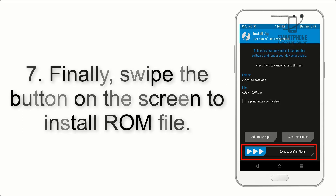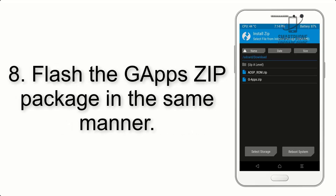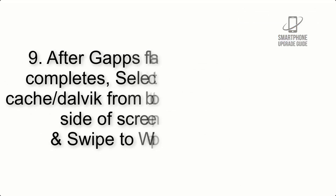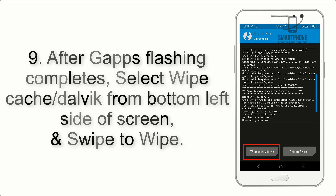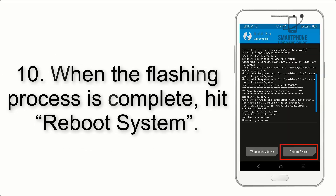Step 7: Swipe the button on the screen to install the ROM file. Step 8: Flash the GApps zip package in the same manner. Step 9: After GApps flashing completes, select Wipe Cache and Dalvik from the bottom left side of the screen and swipe to wipe.